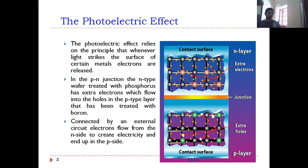In the p-n junction, suppose you have an n-type wafer treated with phosphorus, for example, has extra electrons which flow into the holes of the p-type layer. So there is a p-n junction with p-type holes and n-type layers. Whenever a wafer treated with phosphorus has extra electrons which flow into the holes of p-type layer that has been treated with boron, this is an example of a p-n junction.